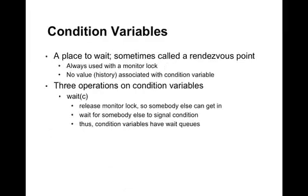Condition variables are what make monitors interesting. There are signal and wait operations on monitors, and the thing that you signal or wait on is called a condition variable. In this way it's very similar to a semaphore, which also has signal and wait operations. What's important to note is that the way condition variable signaling and waiting works is very different from the way semaphores work. The major difference is that condition variables don't have any history. With semaphores, when you signal, the value gets incremented, meaning that a subsequent call to wait may not wait because the semaphore remembers the value of the counter. In a condition variable, there is no history — if one thread calls signal and another thread calls wait later, that later thread has no way of knowing that signal was called previously.